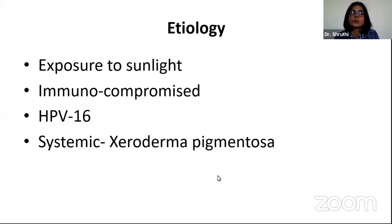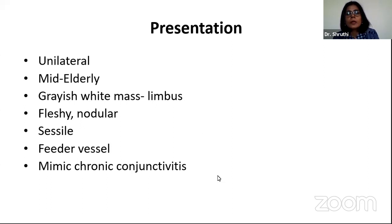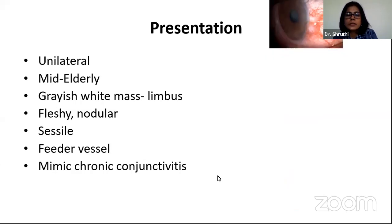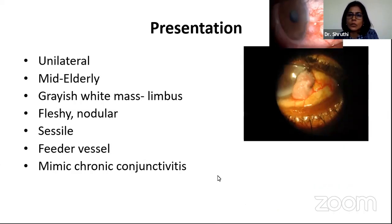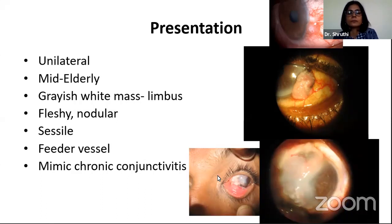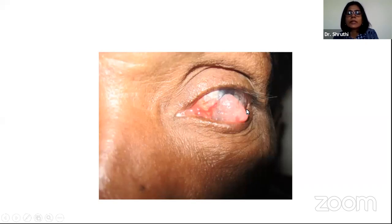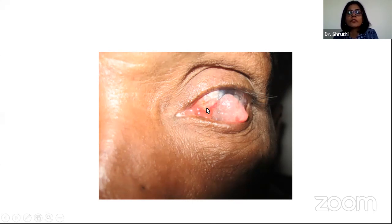Etiology is attributed to exposure to sunlight, immunocompromised individuals, human papillomavirus 16, and certain systemic conditions like xeroderma pigmentosa. They usually present as unilateral, mid-elderly, grayish-white mass at the limbus, fleshy and sometimes nodular. They are sessile and almost always have a feeder vessel, and can sometimes mimic chronic conjunctivitis. A very typical lesion shows a mulberry-like appearance encroaching from the limbus onto the cornea, with a visible feeder vessel.